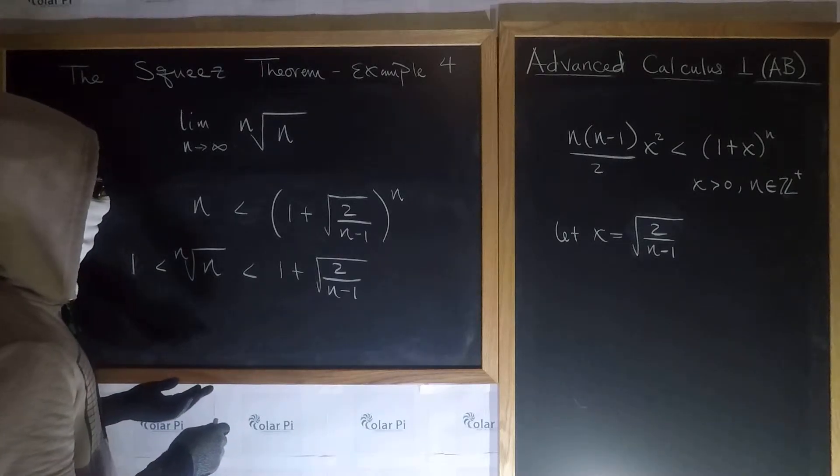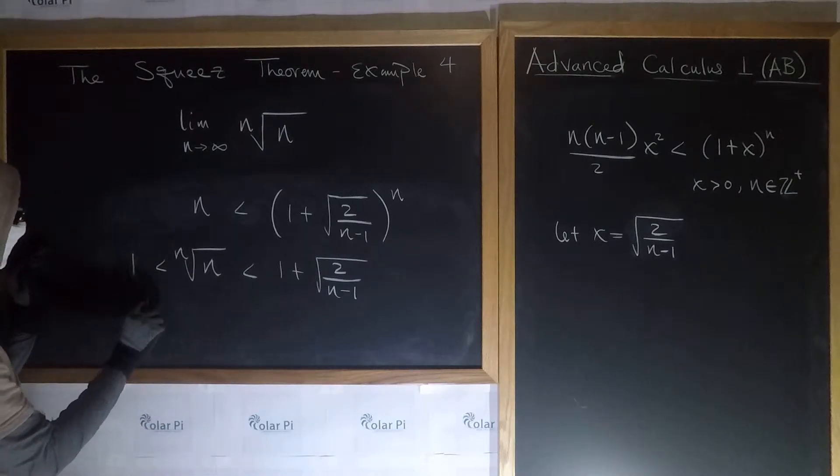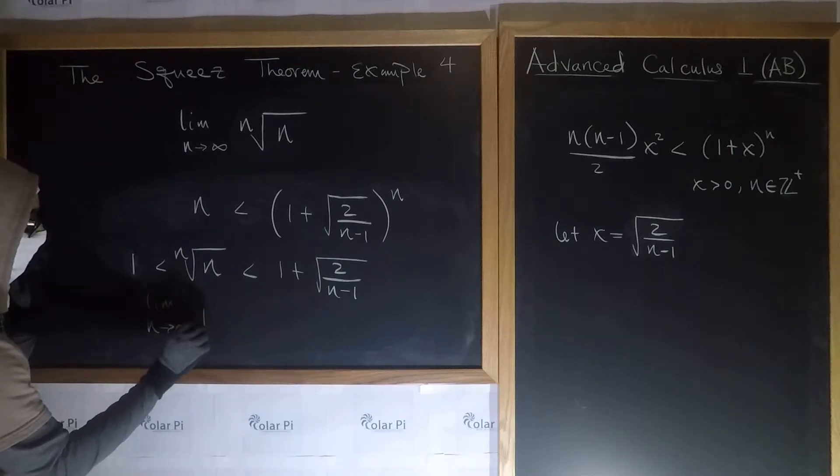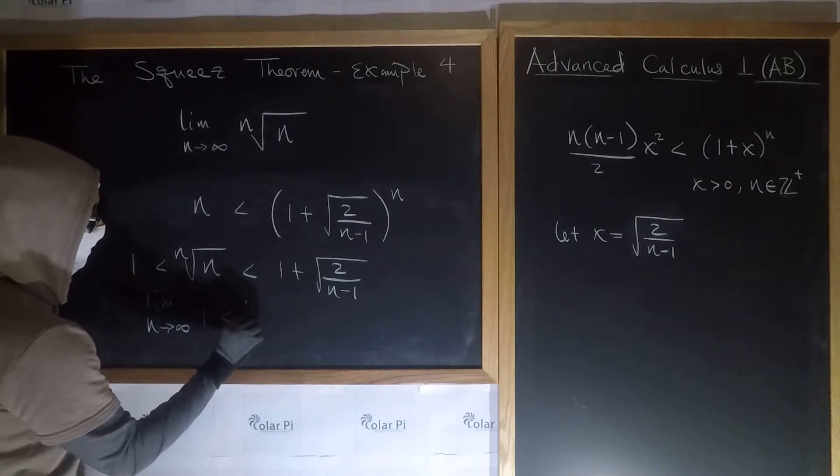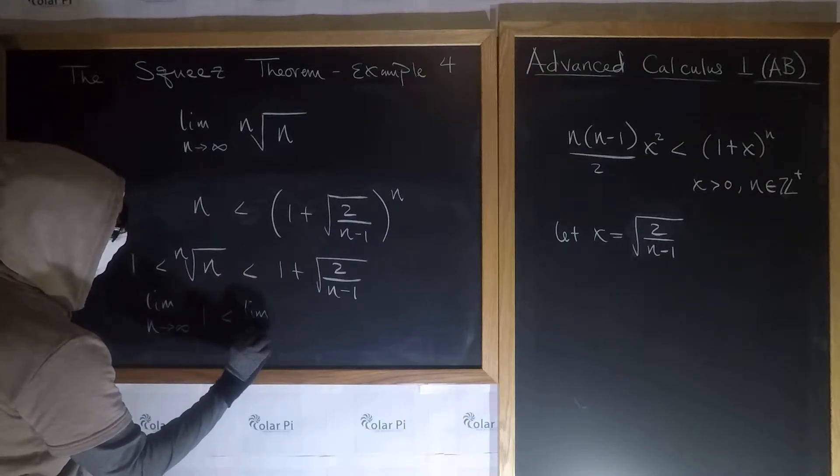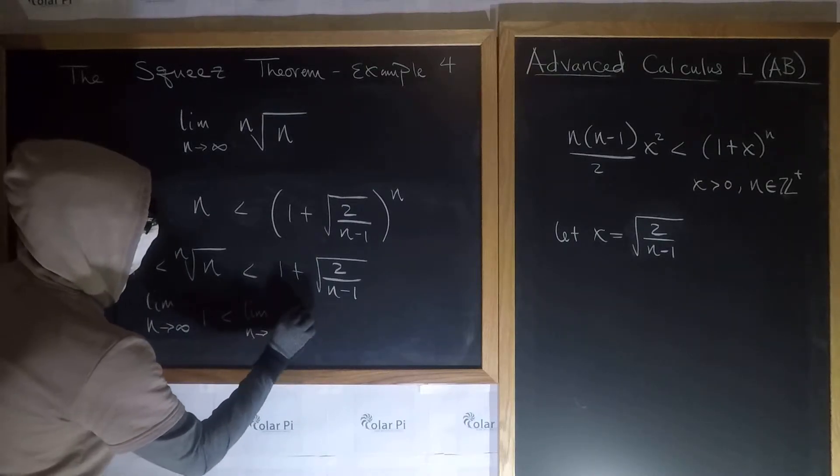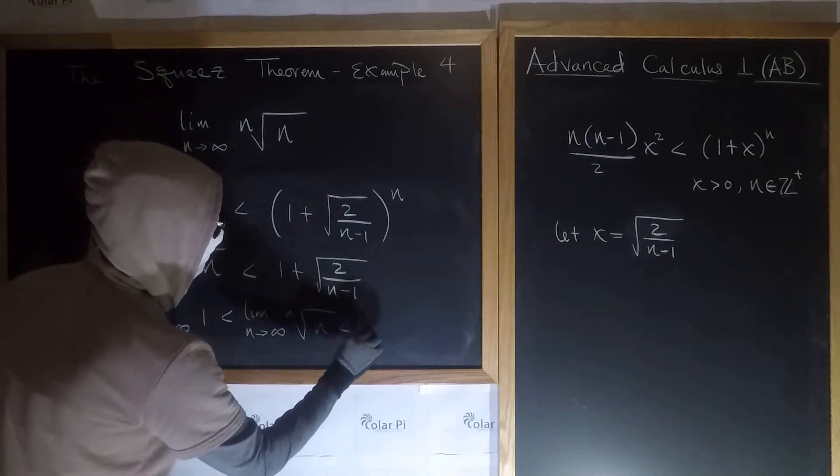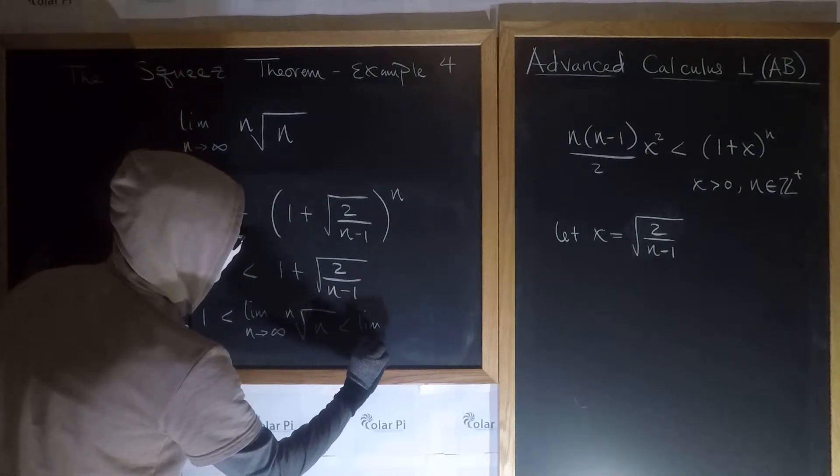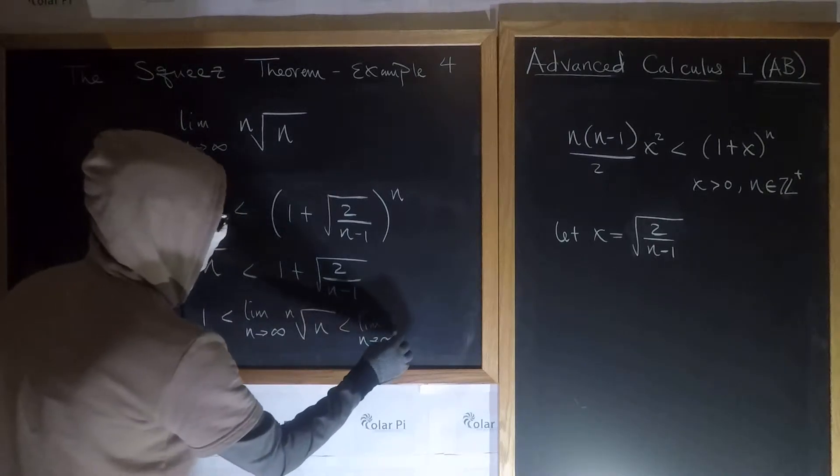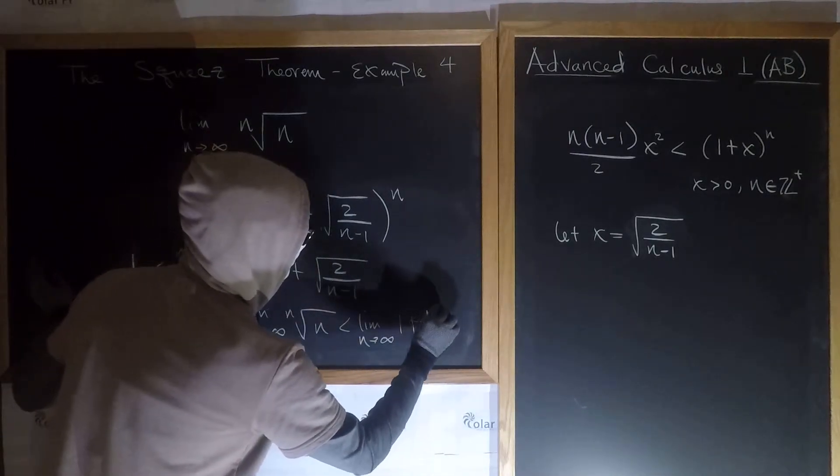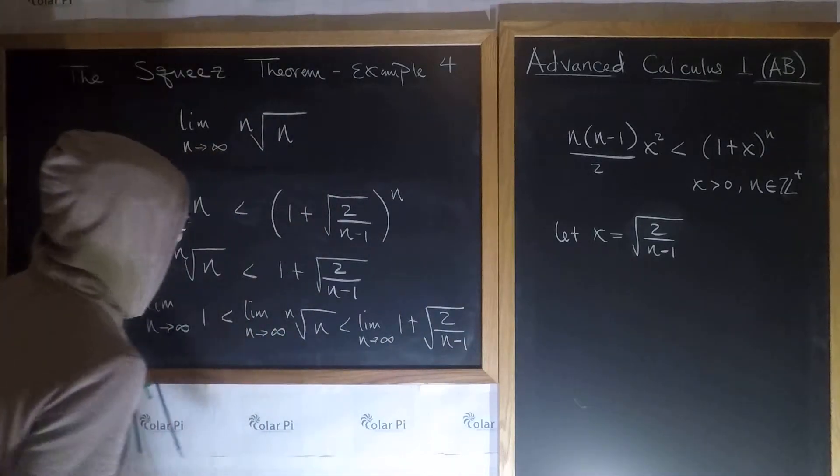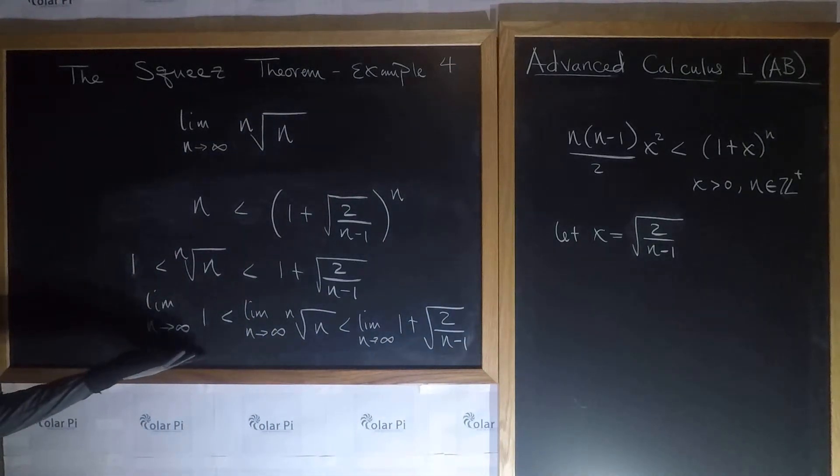Okay, so then what we could do is use a squeeze theorem, and I'll do it here. So if we write lim as n goes to infinity of 1, it has to be less than lim as n goes to infinity of the nth root of n, which is less than lim as n goes to infinity of 1 plus the square root of 2 over n minus 1. Clearly, this here is 1.